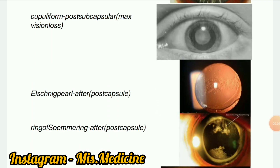Next image: Ring of Soemmering. A Soemmering ring is a form of post-cataract opacity which occurs after the central section of the lens has been removed, secondary to trauma or surgery. It is caused by the adherence between the residual outer part of the anterior capsule and the posterior capsule.